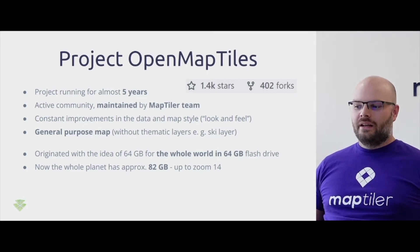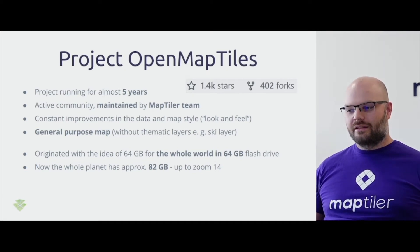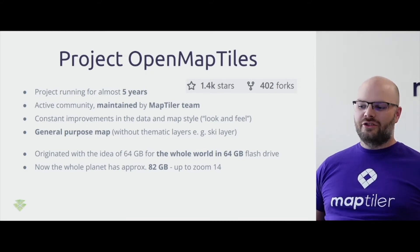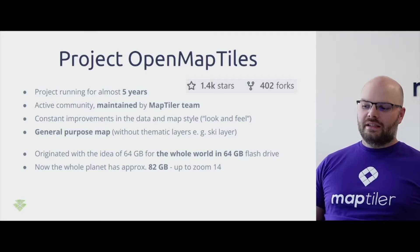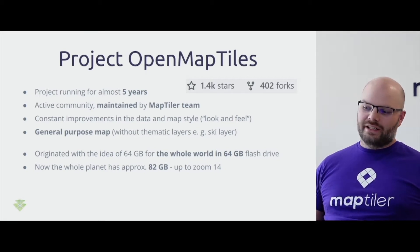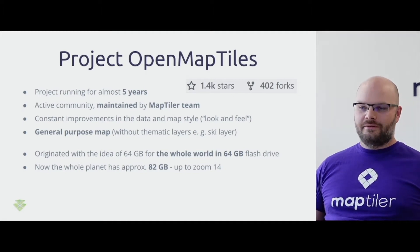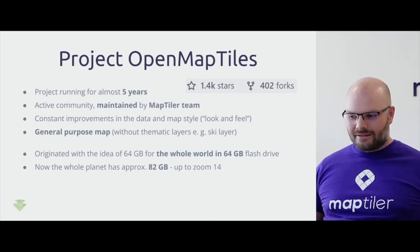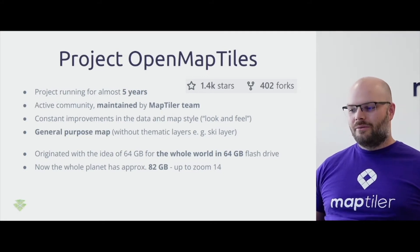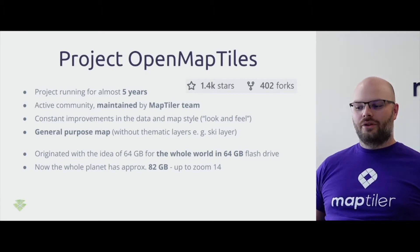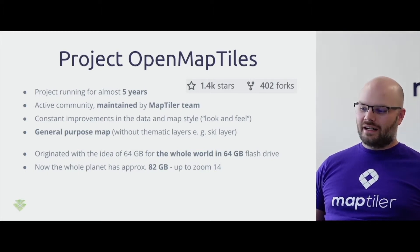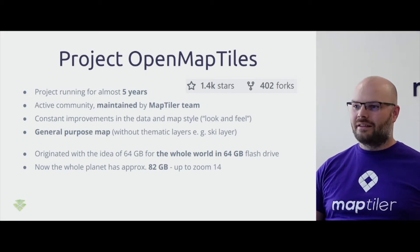With active community development there are constant improvements on the data side, where we keep adding new features or optimizing current data and the look and feel of the map styling. The main purpose of OpenMapTiles is to provide a general purpose map without thematic layers, for example ski layers. The project started with the idea of having the whole planet on a 64 gigabyte flash drive or micro SD card. Those times are gone — with additional features and more data in OpenStreetMap we are now at 182 gigabytes of MBTiles for the whole planet up to zoom level 14. Nevertheless, a 182 gigabyte micro SD card now costs less than a 64 gigabyte flash drive did back in 2016.